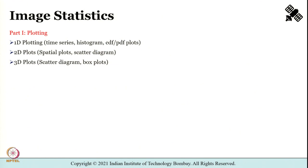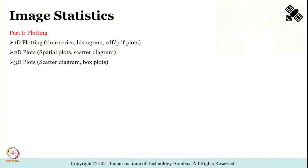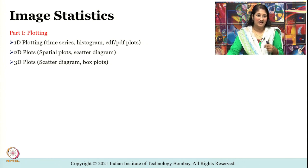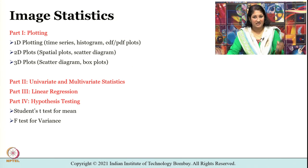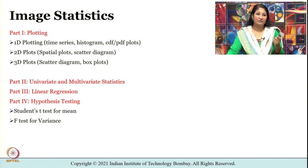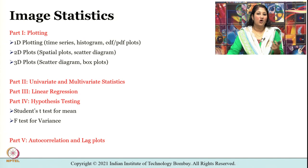Many a time, more data does not necessarily mean more information. In this tutorial, we shall learn about different ways to summarize and present data. Section 1 covers graphical representation of data — 1D, 2D, and 3D plots using synthetic data and variables like temperature and precipitation. Section 2 focuses on univariate and multivariate statistics. Section 3 covers linear regression, section 4 covers hypothesis testing, and section 5 introduces autocorrelation and lag.